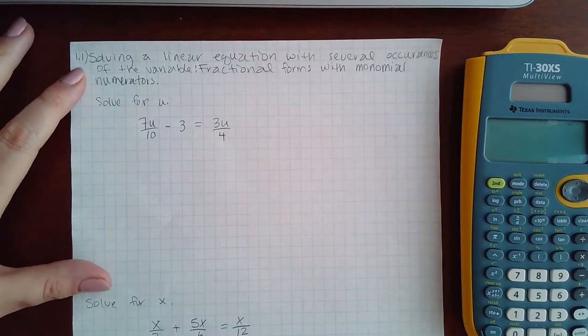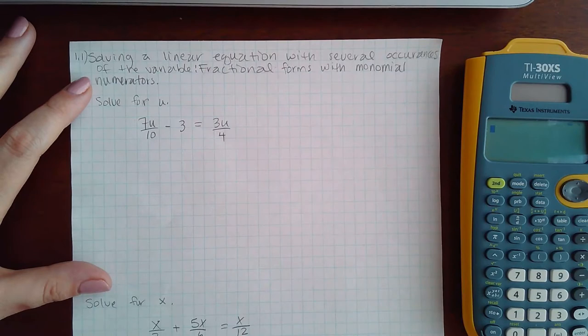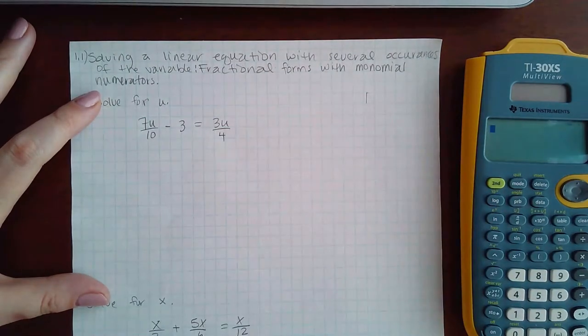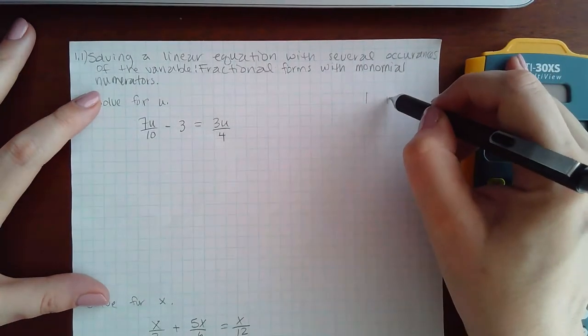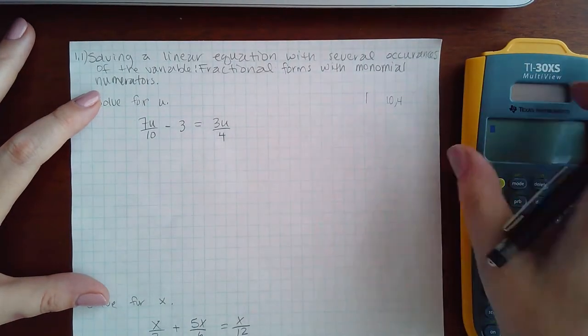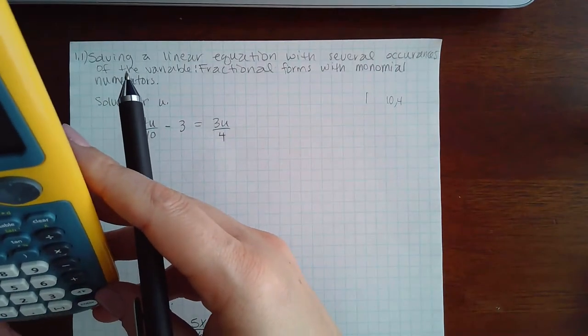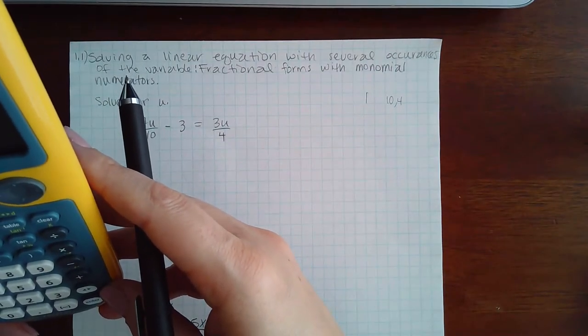This topic is solving a linear equation with several occurrences of the variable, fractional forms with monomial numerators. You do need to do step one, which is to eliminate the fractions. So between the numbers 10 and 4, we do have to find the lowest common denominator.